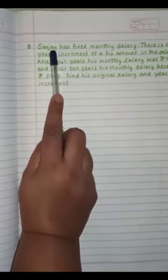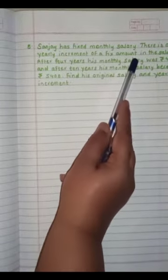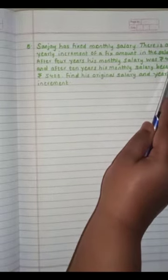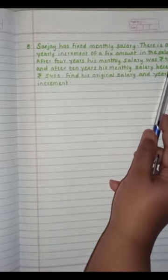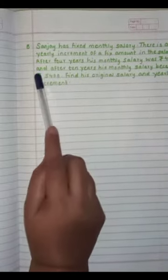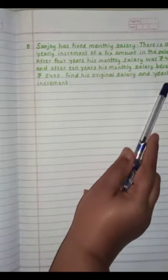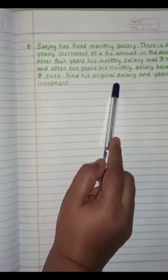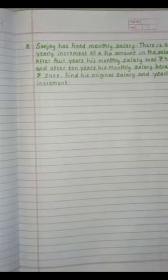Question number 5. Sanjay has fixed monthly salary. There is a yearly increment of a fixed amount in the salary. After 4 years, his monthly salary was Rs. 4,500 and after 10 years, his monthly salary became Rs. 5,400. Find his original salary and yearly increment. They asked to find out salary and increment. That only we are going to assume. So, how we will start?